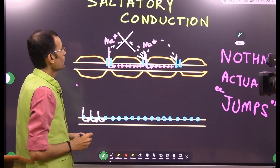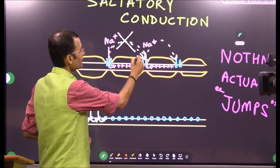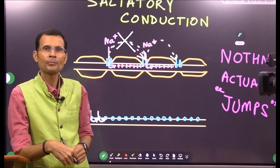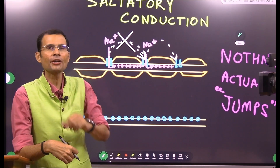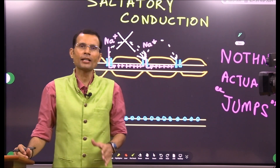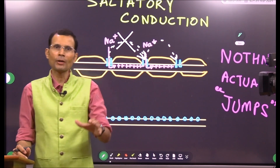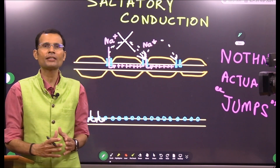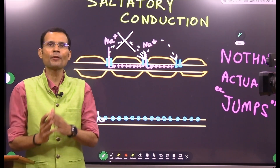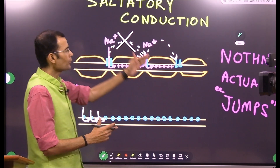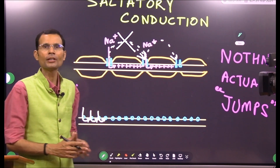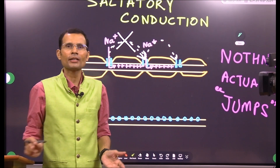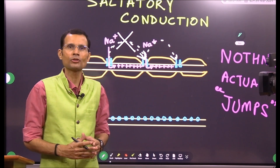What is it that is jumping? I'm talking about saltatory conduction. The other day I asked a student in a viva what is saltatory conduction, and he happily answered: it is the jumping of action potential from one node of Ranvier to the next node of Ranvier in the myelinated nerve fiber. He was right because it has been given this way in the books.